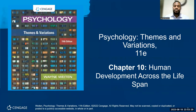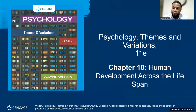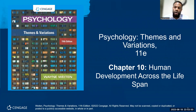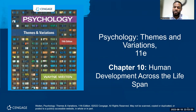All right, scholars, welcome back. I hope you all are well. Today we're going to cover chapter 10. We're going to split this chapter of human development across a lifespan into two parts. The first part will be concerned with the development of young people into adolescence, and then the second part will be adolescence through middle adulthood and then late adulthood.